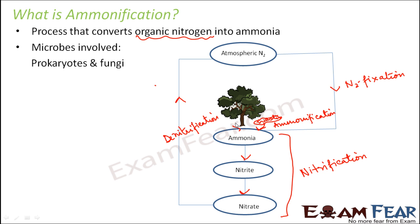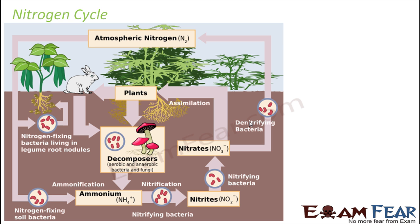The ammonia which is produced can again be utilized by the plants. All these processes together form the nitrogen cycle. The atmospheric nitrogen is utilized by nitrogen-fixing bacteria and converted into ammonia. The ammonia is further converted into nitrites and then into nitrates, which can be utilized by plants. When plants die, decomposers act on them and ammonification takes place, forming ammonia again. Denitrifying bacteria then convert the nitrates back into atmospheric nitrogen. This entire process is the nitrogen cycle.